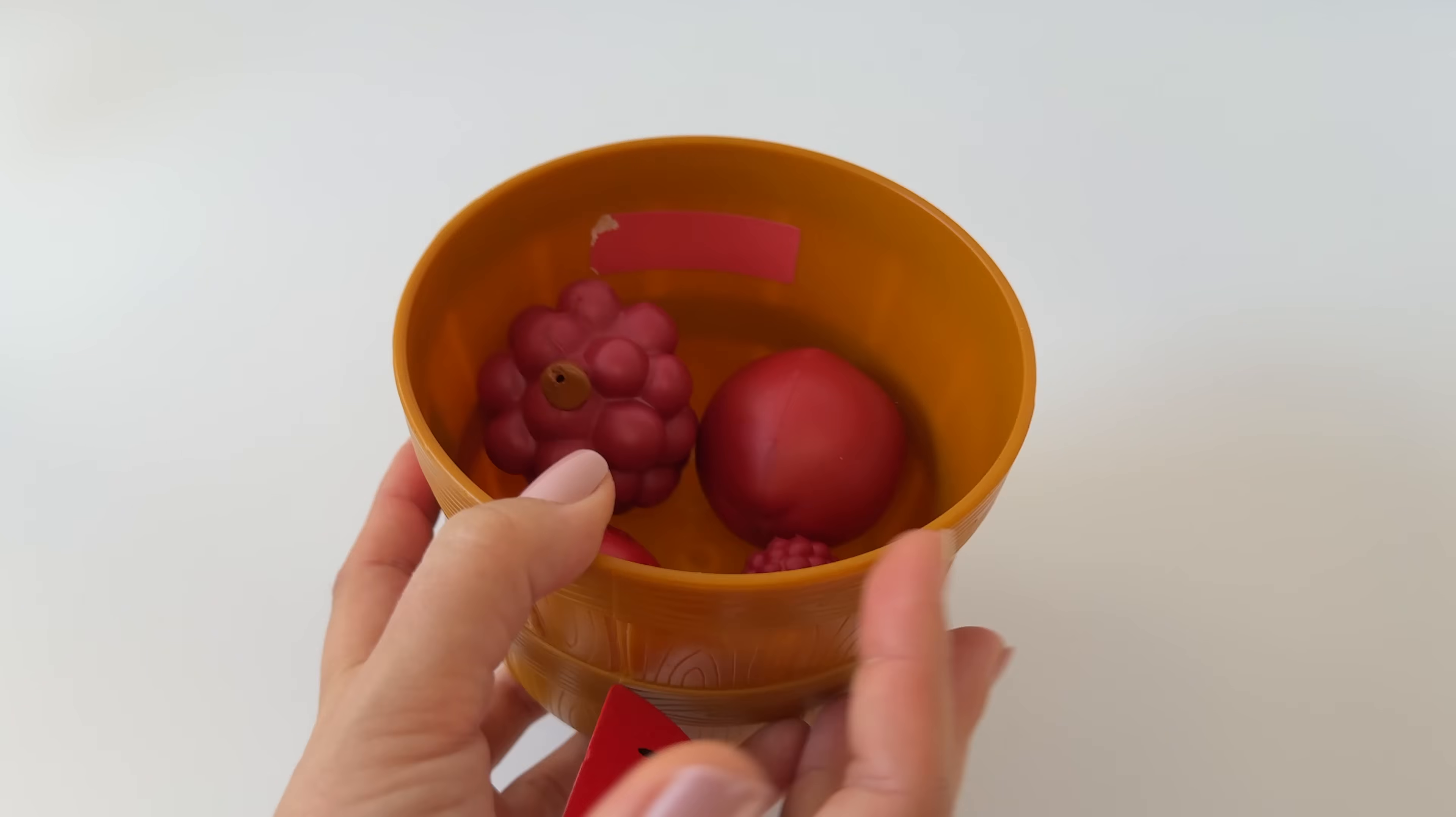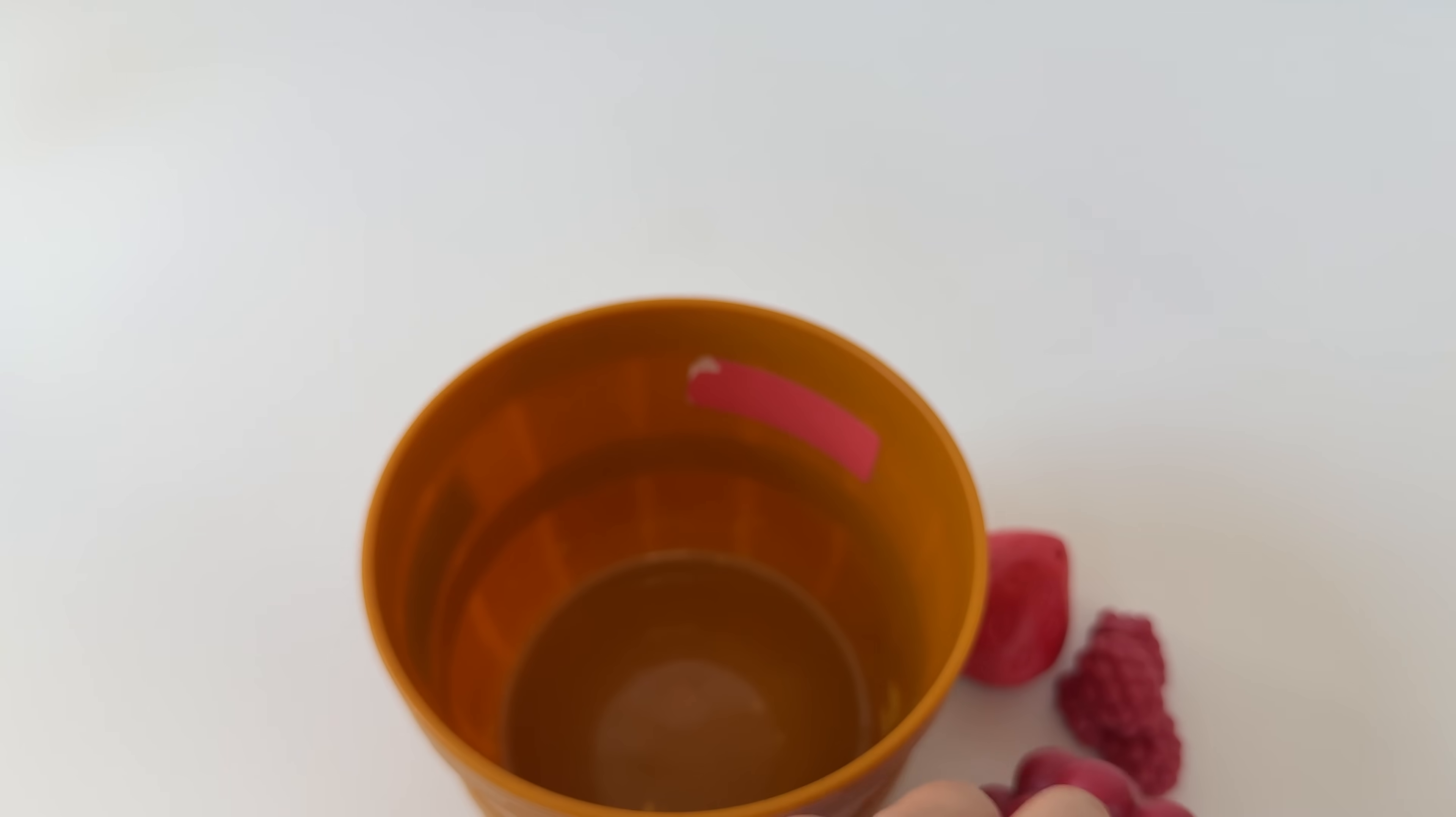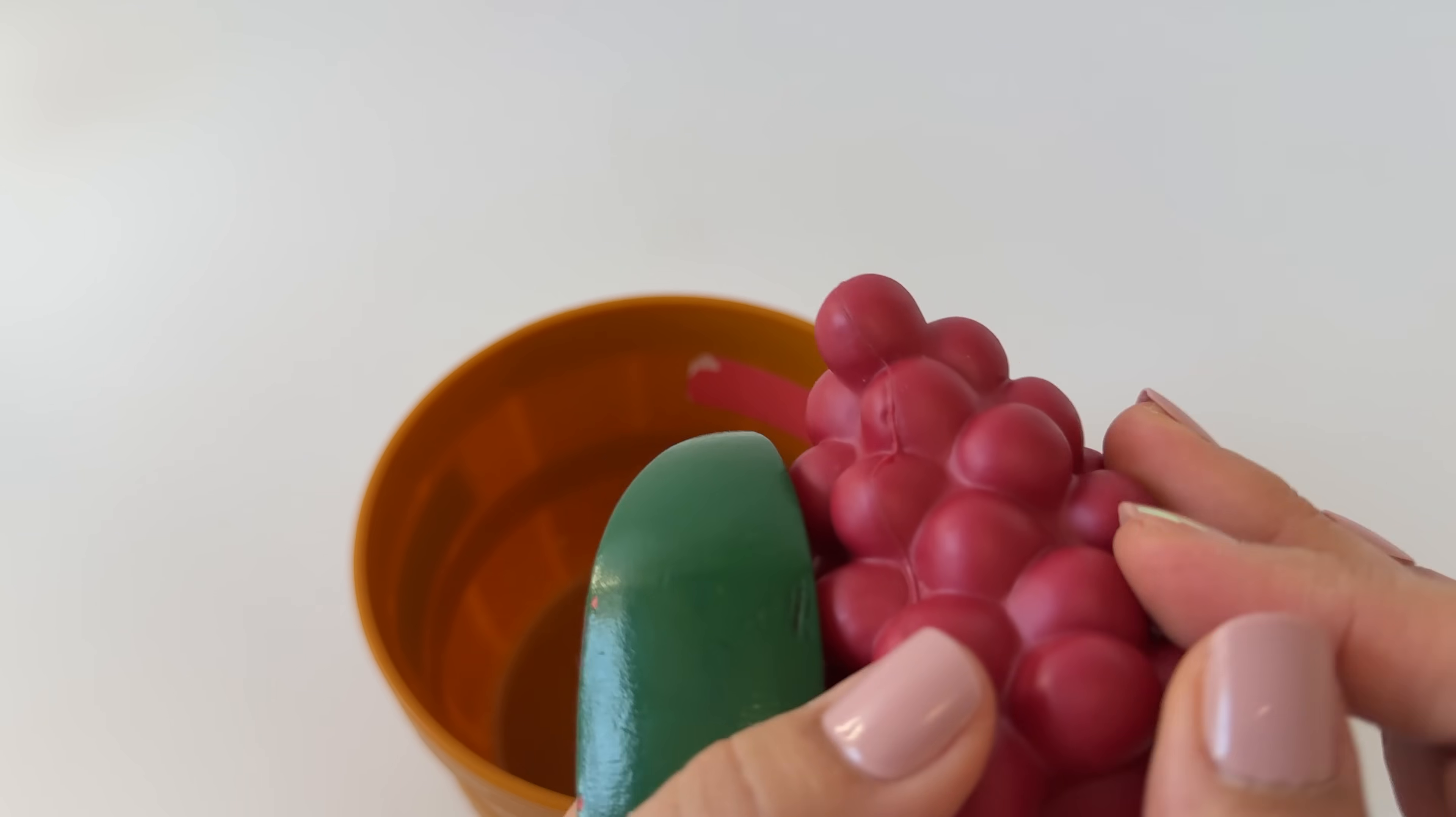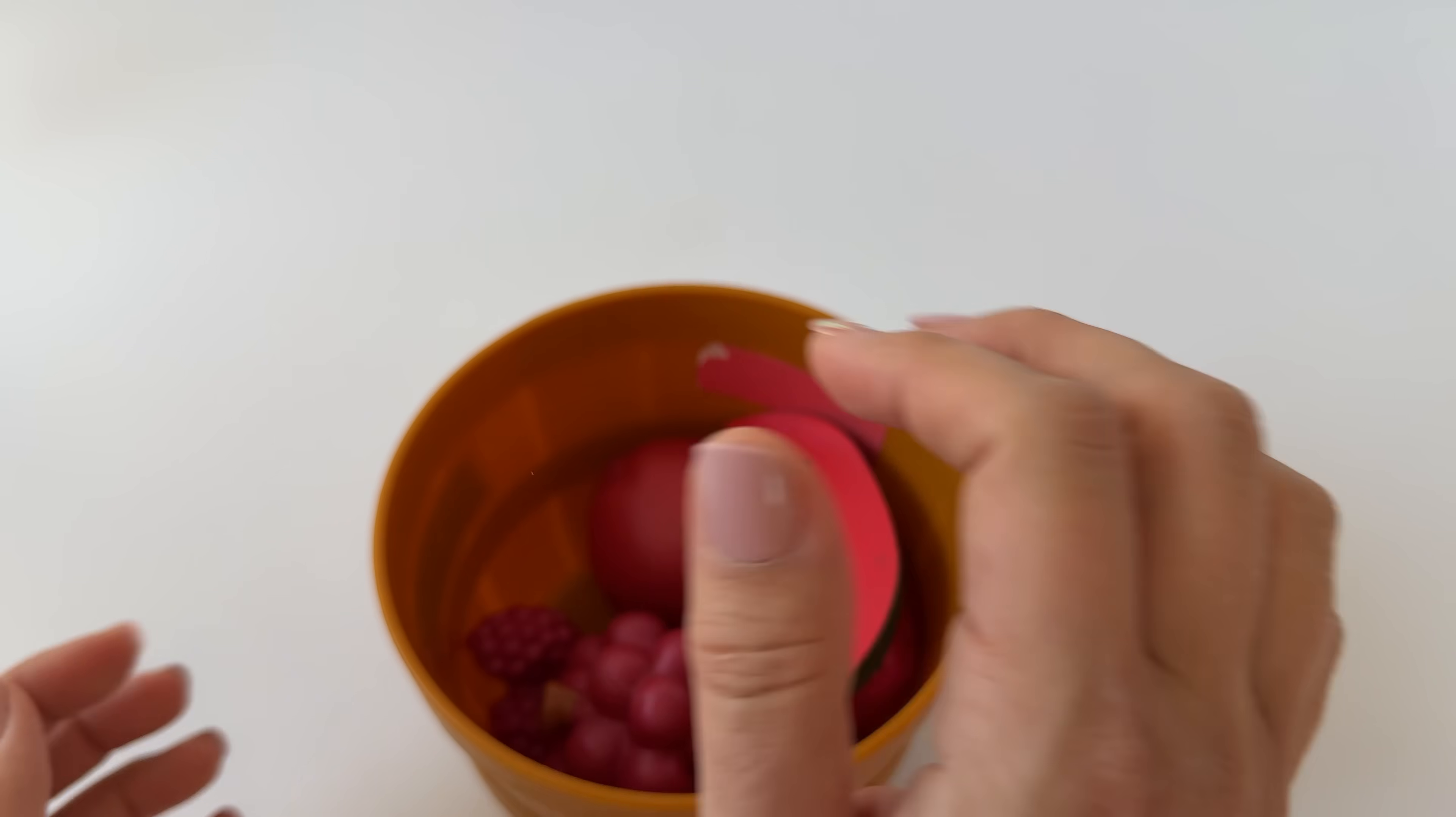What's in here? Some red foods. We have red raspberries, red strawberries, red grapes, red apple, and a red watermelon. Yum. We have this many. Let's count them. One, two, three, four, five. Five red fruits.